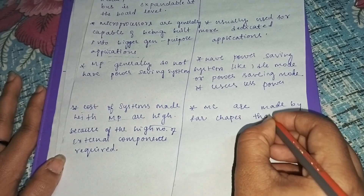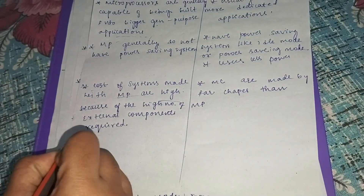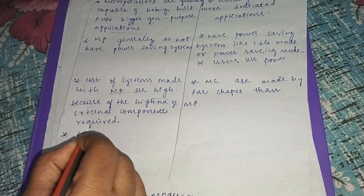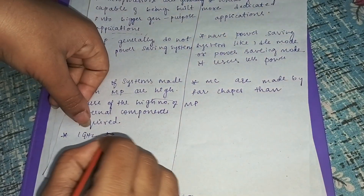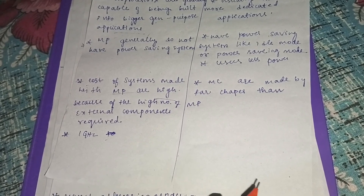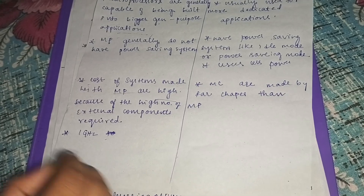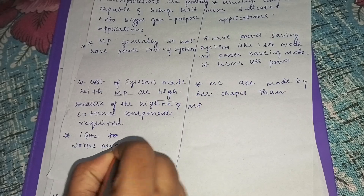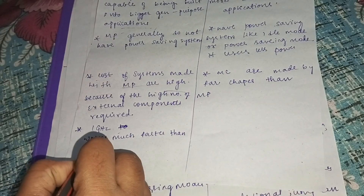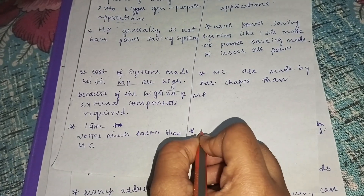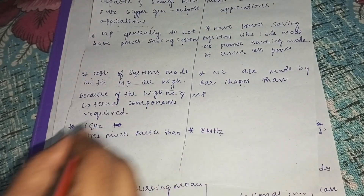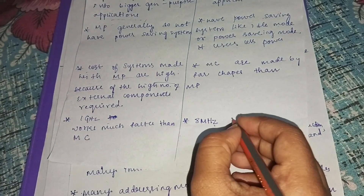The sixth point: the processing speed of a general microprocessor is above 1 GHz, which is much faster. The processing speed of a microcontroller is about 8 MHz to 50 MHz, which is less than a microprocessor.